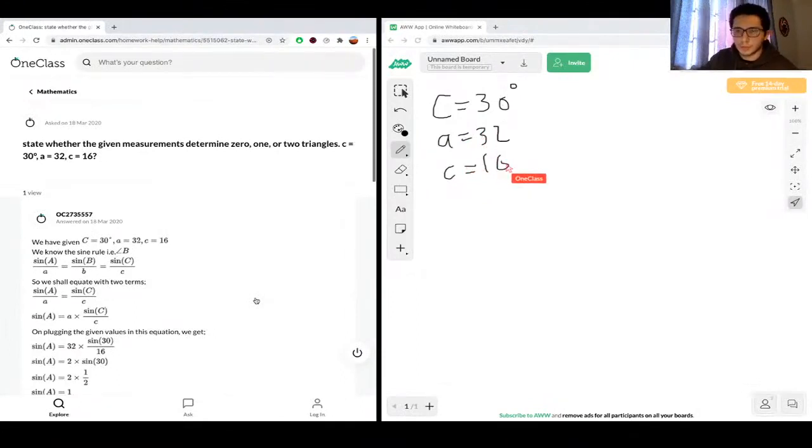The next component we're given is A is equal to 32, and then the last component is C equals 16. So these values represent the sides of the triangle. So one side is C, let me just write this clearly. One side is equal to 16, the opposite angle is 30 degrees, and then the A is representing another side.